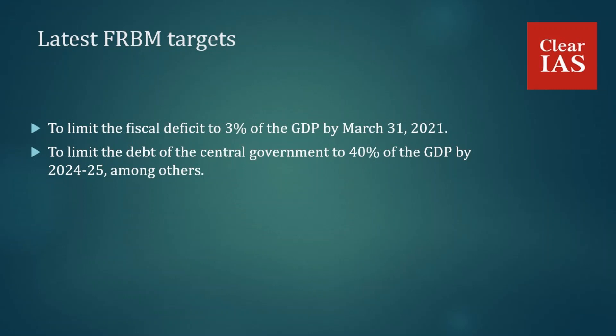The act also provides room for deviation from the annual fiscal deficit target under certain conditions. In the wake of the coronavirus pandemic, it is uncertain how accurately the government can follow these targets, and provisions exist for deviation from the fiscal deficit target. The 3% target by March 31st 2021 was unlikely to be met. This act is very important for maintaining the fiscal and economic health of our country, and is an important topic for Prelims, Mains, and interview examinations.